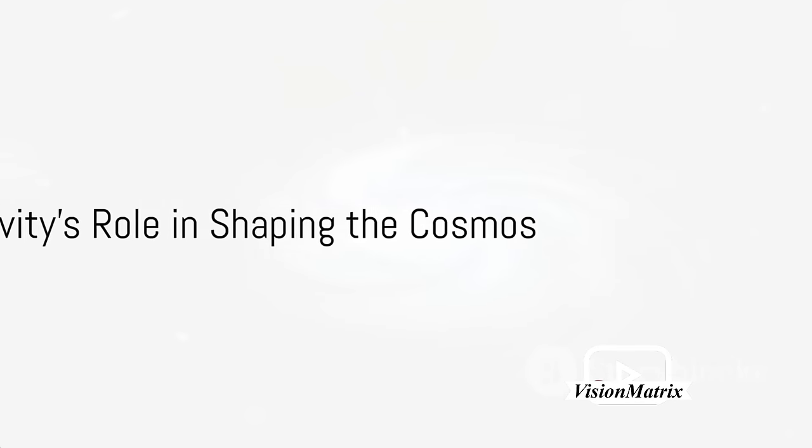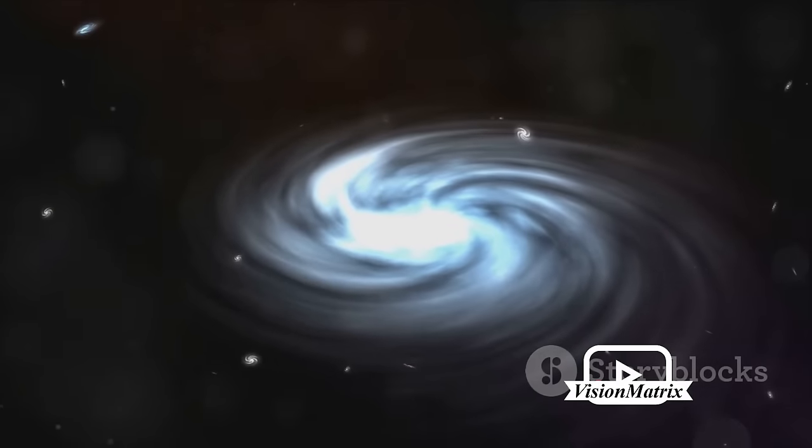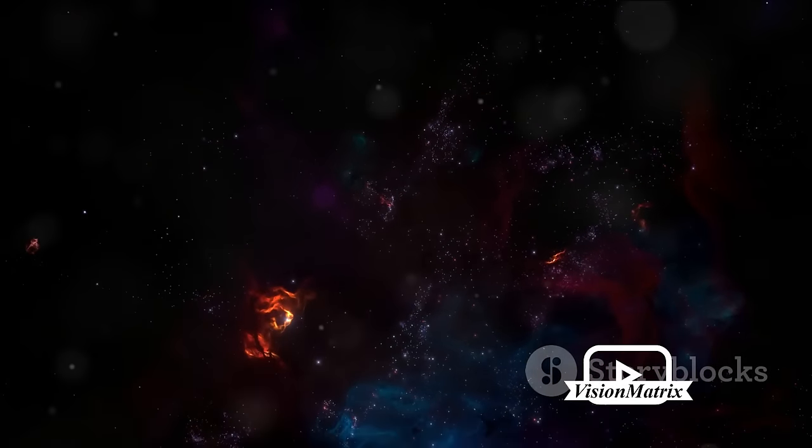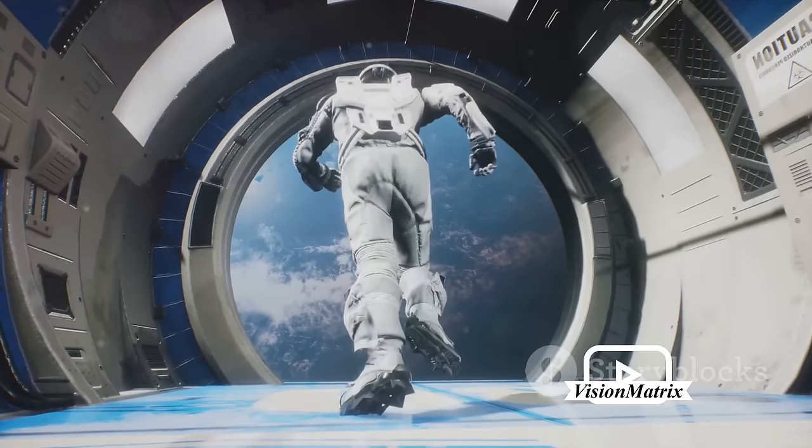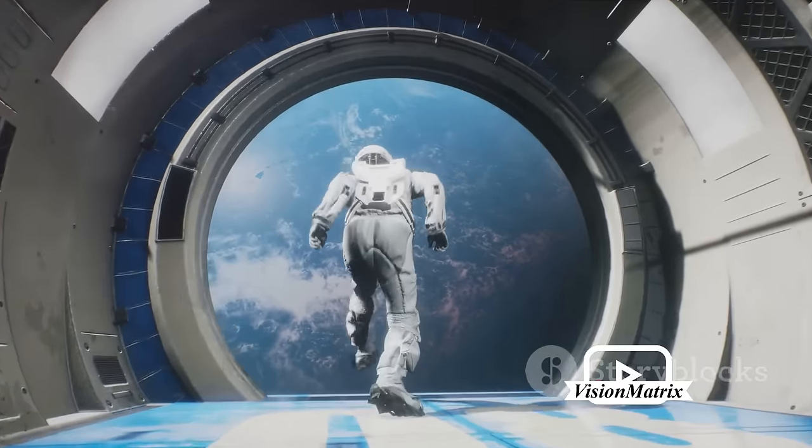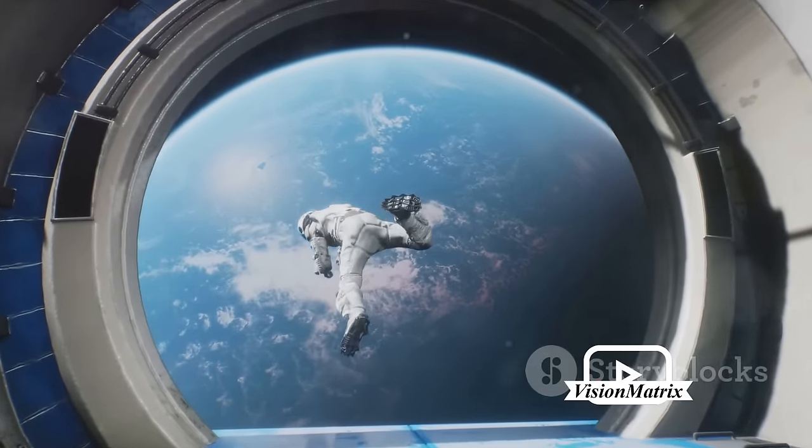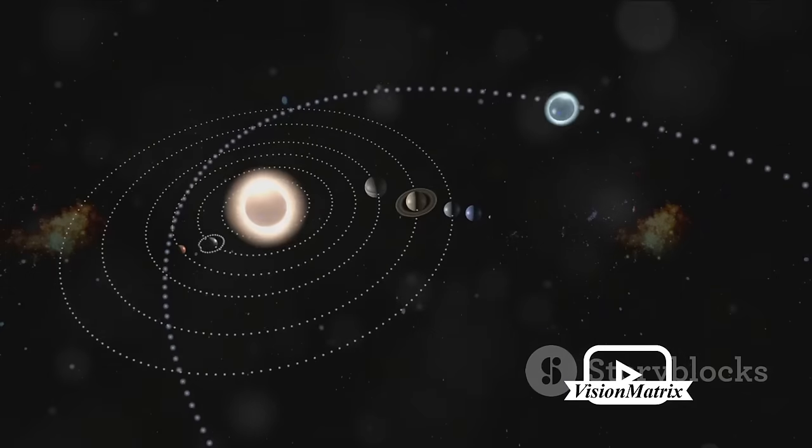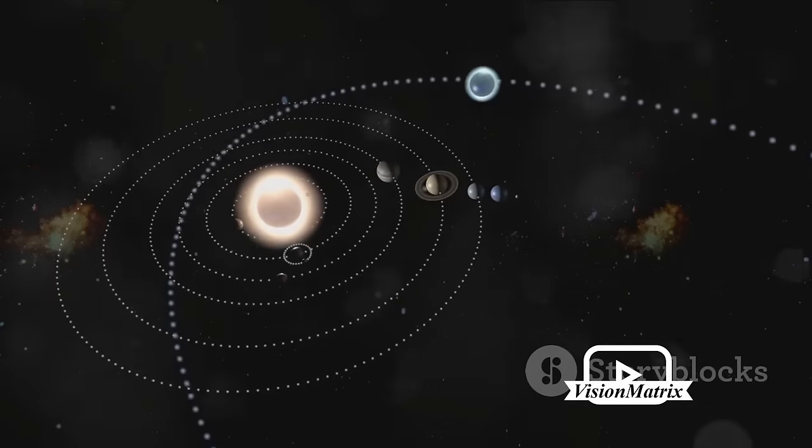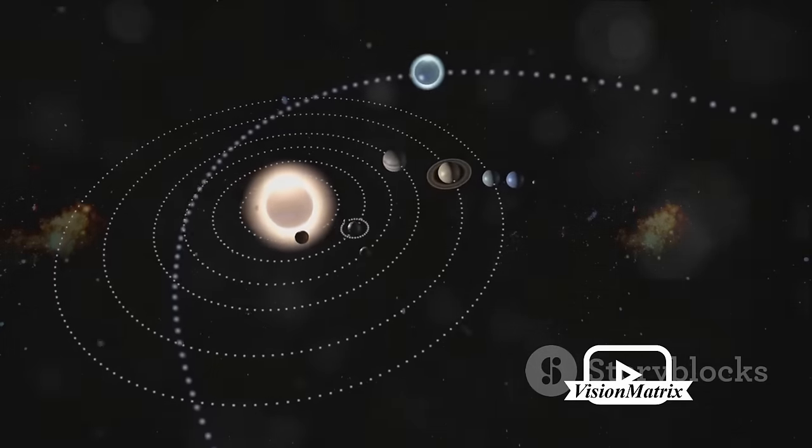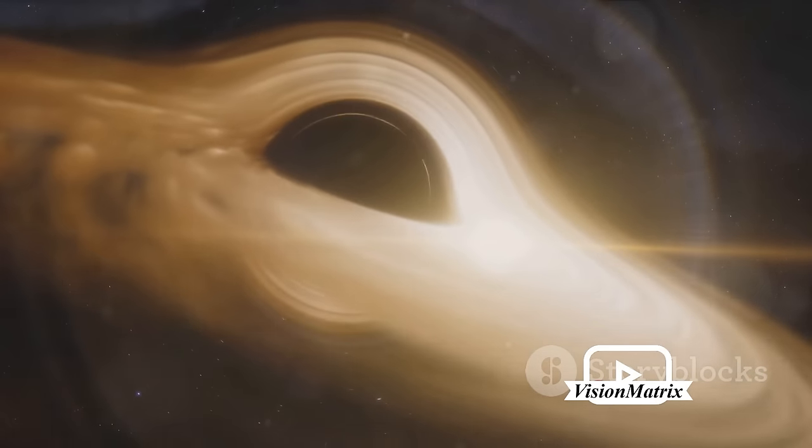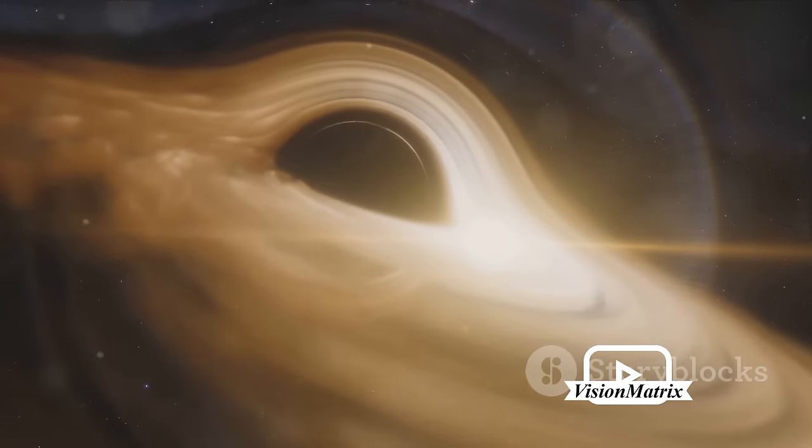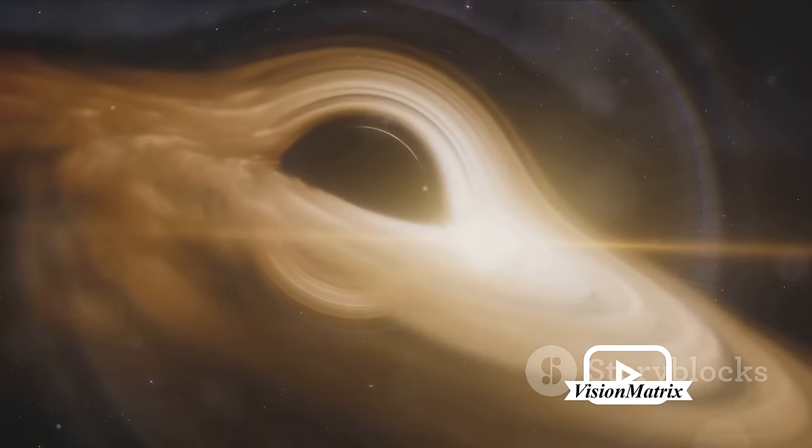Gravity, the invisible force that keeps us grounded, also plays a vital role in shaping the cosmos. This unseen puppeteer working on a cosmic scale is instrumental in the creation of solar systems, galaxies and even clusters of galaxies. Imagine a massive celestial body such as a star, as a bowling ball sitting on a trampoline, creating a dip. This dip is the gravitational pull drawing nearby objects towards it. This is how solar systems are formed. Now picture numerous bowling balls on this trampoline, each creating their own dips and influencing each other's movements. This is how galaxies and clusters of galaxies come into existence.